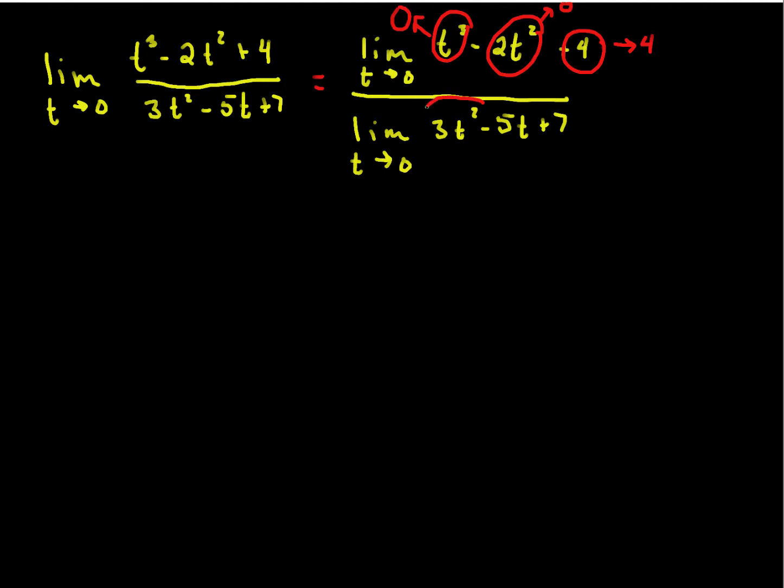And here, 3t squared is going to 0, 5t is going to 0, and 7 is going to 7. Putting that all together, we see that the limit of the top is 0 minus 0 plus 4, so that's equal to 4. And the limit on the bottom is 0 minus 0 plus 7, so the answer is 4 sevenths. And we're done.